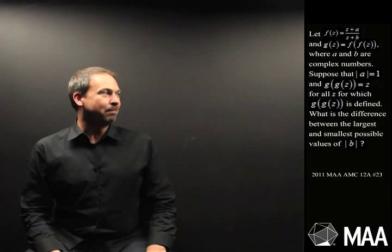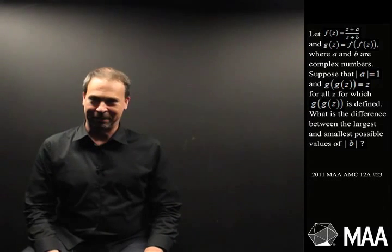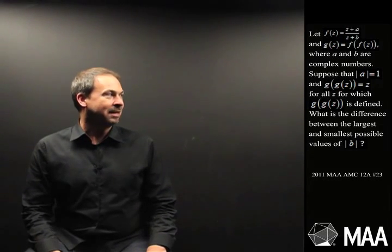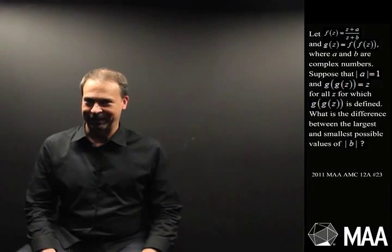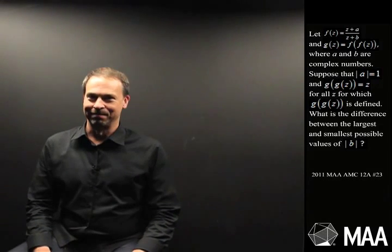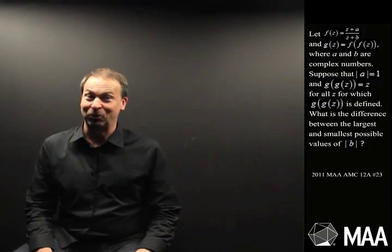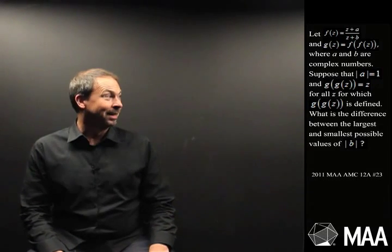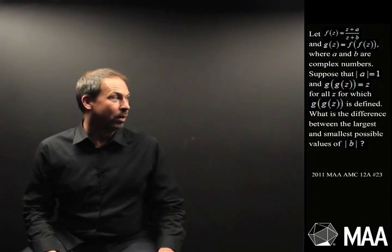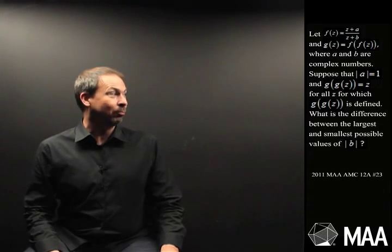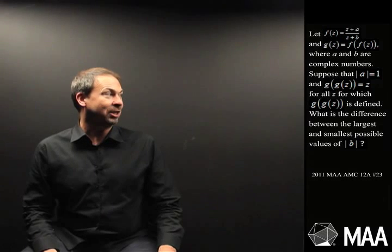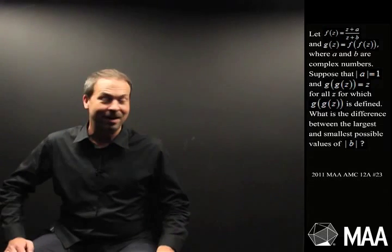Let f of z equal z plus a over z plus b, and g of z equal f of f of z, where a and b are complex numbers. Suppose that the absolute value of a is 1 and g of g of z equals z for all z for which g of g of z is defined.